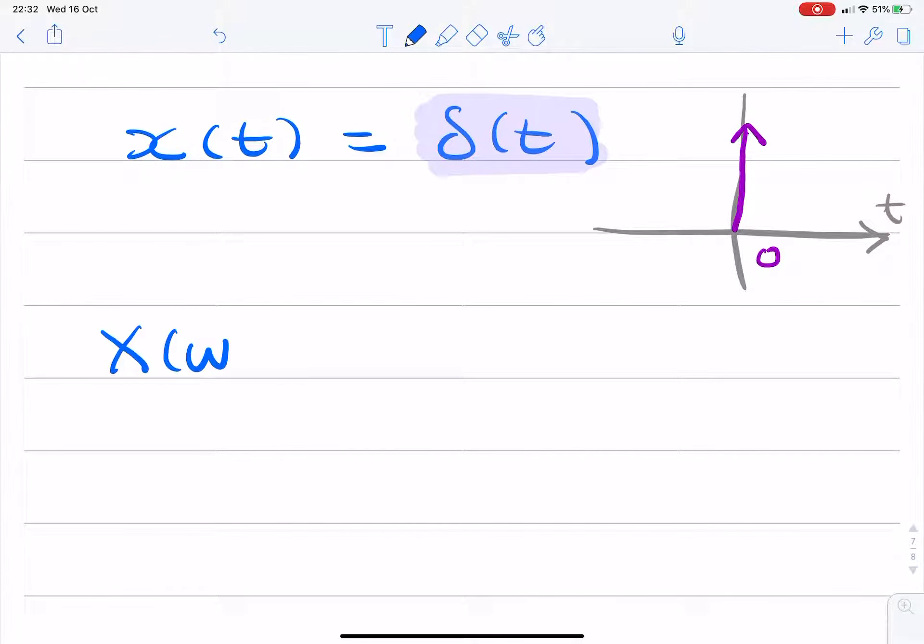We can simply apply the definition, which is the integral from minus infinity to infinity of x(t) e to the minus iωt dt. And x(t) is a delta Dirac function, so we can put that in there.